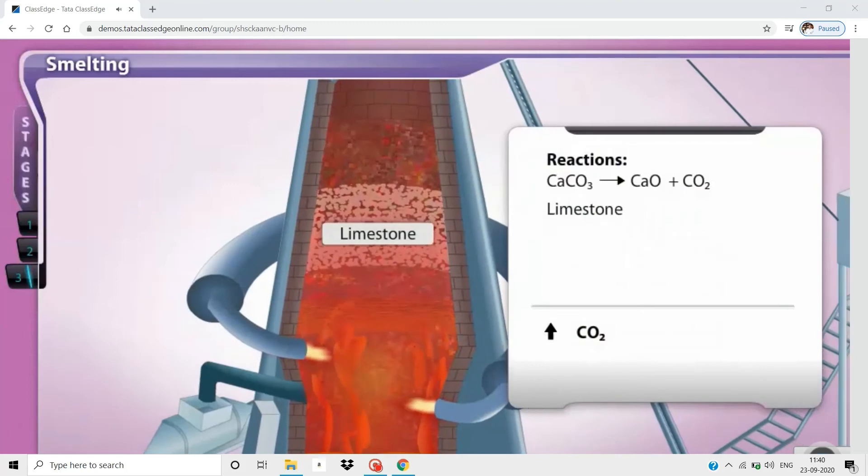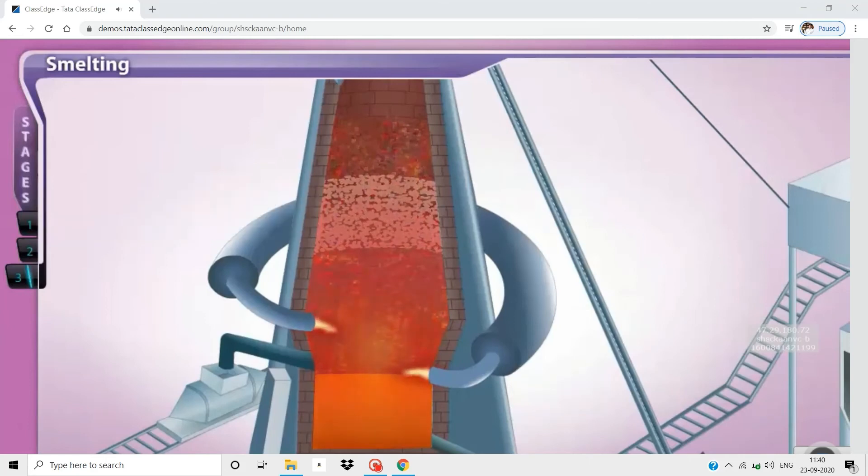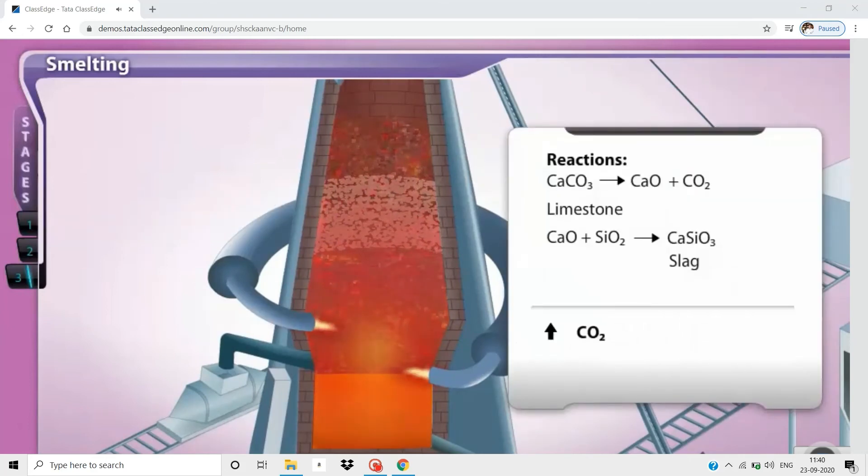Meanwhile, the limestone present in the charge decomposes to give calcium oxide. Calcium oxide reacts with silica impurities in the ore to form the slag, calcium silicate, in the slag zone. This molten slag sinks to the bottom of the furnace.